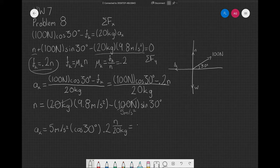So, you'll end up with something like 5 meters per second squared times the cosine of 30 degrees. We'll get a minus sign over here.